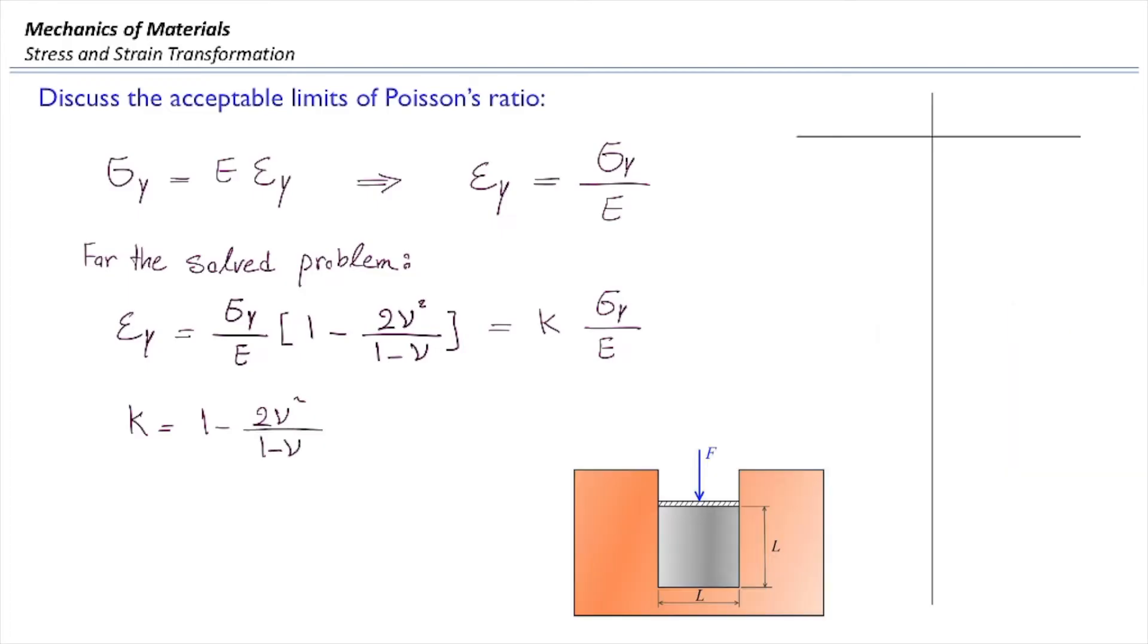Now I want to calculate how much would be the k-factor for different Poisson's ratio. Let's determine the k-factor for each of those and try to interpret what it means.